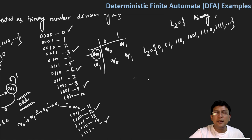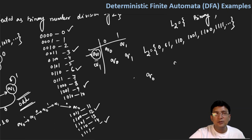Since we're dealing with binary language, for divisibility by 2 we needed two states, and when we talk about divisibility by 3, we will need three states: Q0, Q1, and Q2.